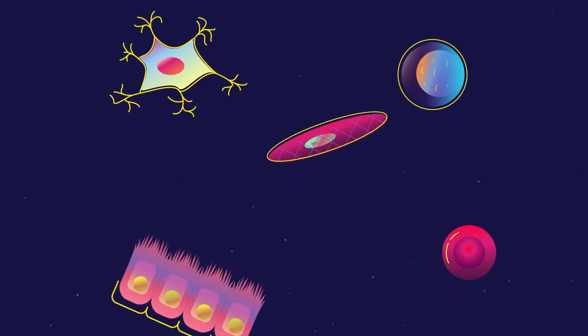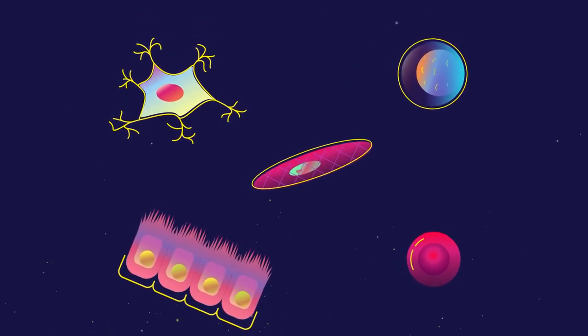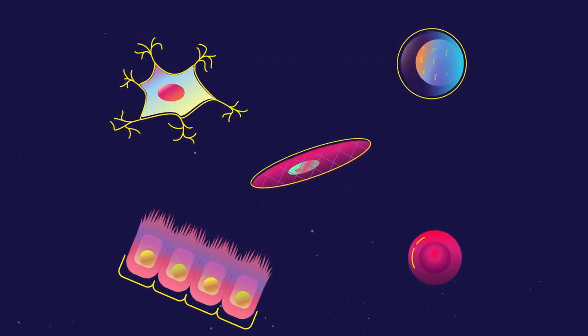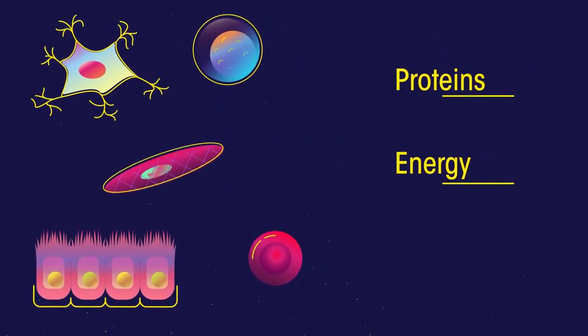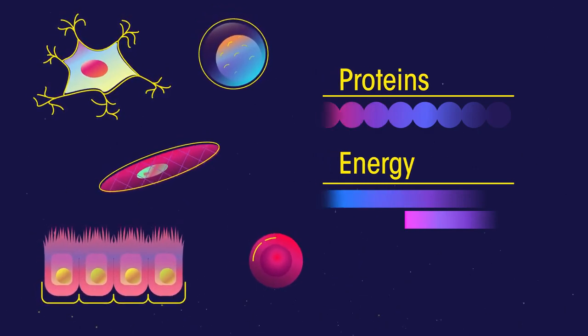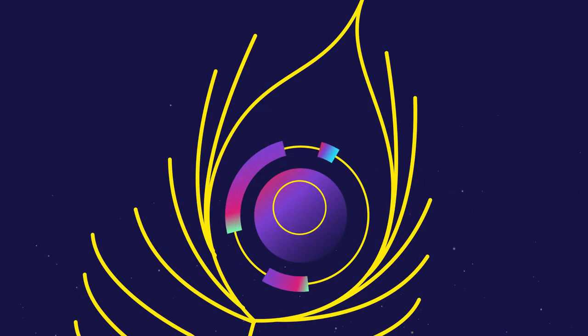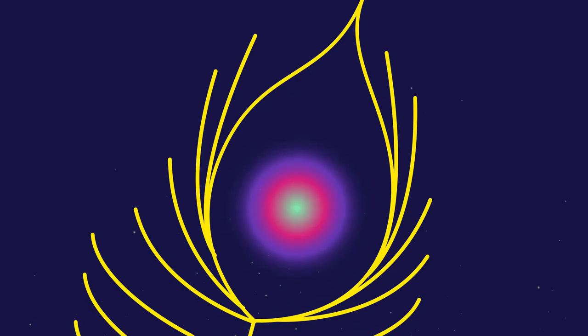Now there are many different types of cells, and each cell carries out its own jobs. Some of these jobs are common to all cells, such as making proteins and producing energy, while some jobs are specific to the type of cell. A human sperm cell has to be able to swim, while the cells that produce a peacock's tail must produce beautiful coloured pigments.